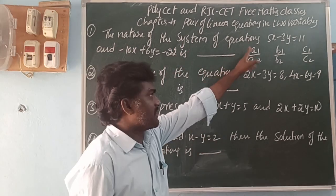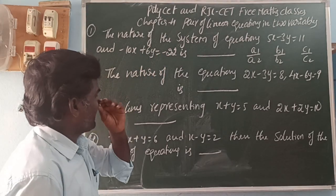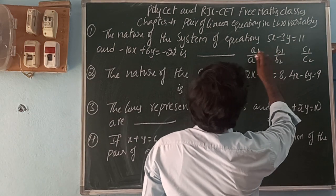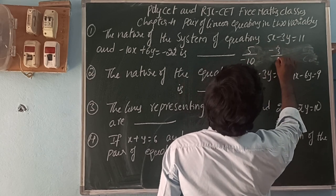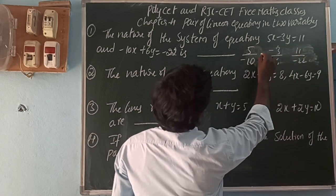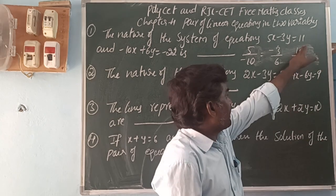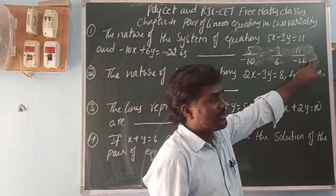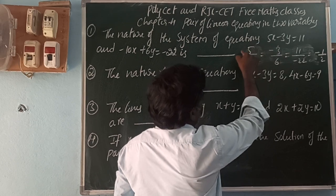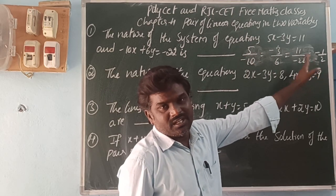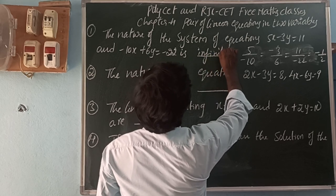So here, the nature of the system of equations: 5x minus 3y is equal to 11 and minus 10x plus 6y is equal to minus 22. We compute: 5 by minus 10 equals 1 by minus 2; minus 3 by 6 equals minus 1 by 2; and 11 by minus 22 equals 1 by minus 2. So here we can get the ratio — minus 1 by 2 in all three cases. The three ratios are equal, so the lines are coincident lines and the solutions have infinitely many solutions.